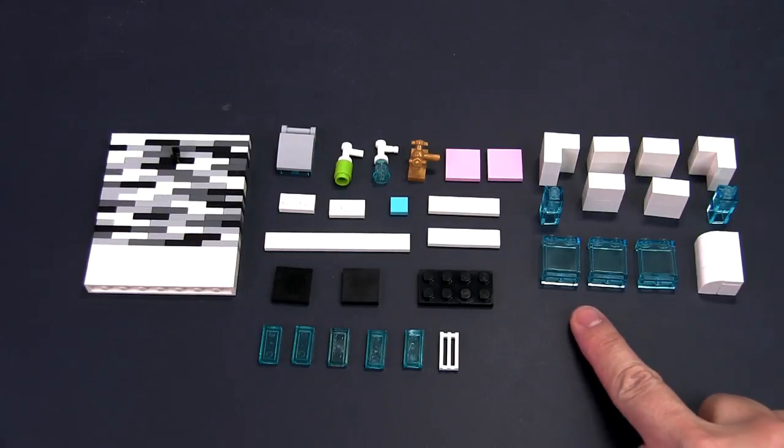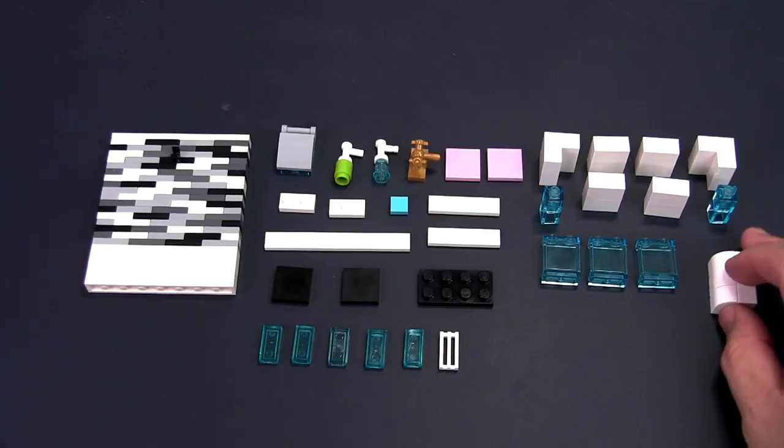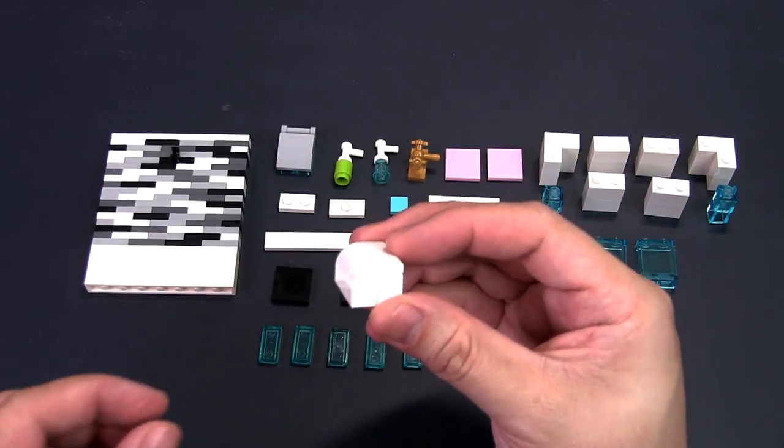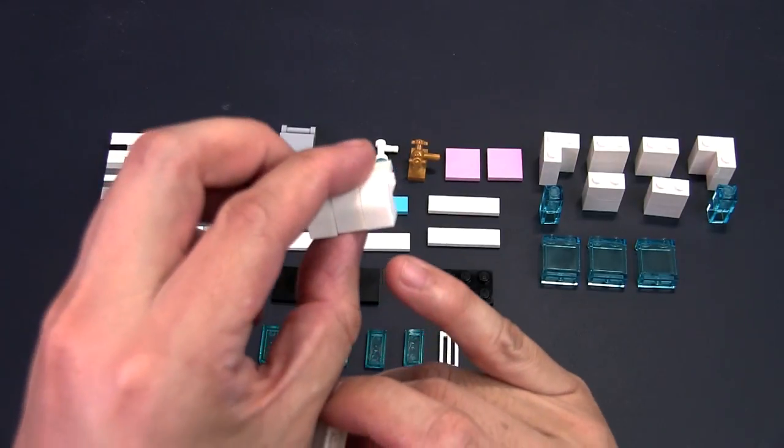You will need three 2x2 trans-blue panels. You will need to create a side support in the bathtub using three curved bricks held together by two 1x3 plates and a 1x3 tile.